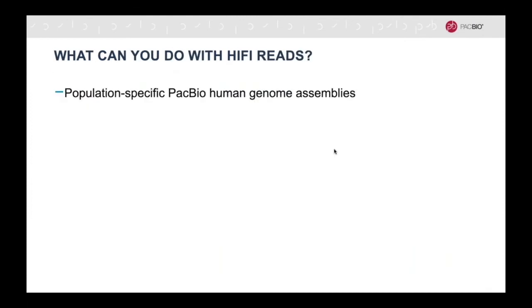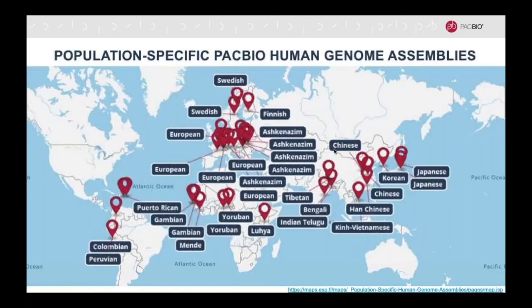You can apply HiFi reads to a range of different types of variant detection studies, like building population-specific reference genomes. As you can see from this map, there have been numerous reference genomes built using SMRT sequencing across the globe, and more are being sequenced. A high-quality, population-specific genome will help map the full range of variants to give a better understanding of which variants are shared globally and which are population-specific. This information will be very important for diagnostics and treatment development for various diseases.